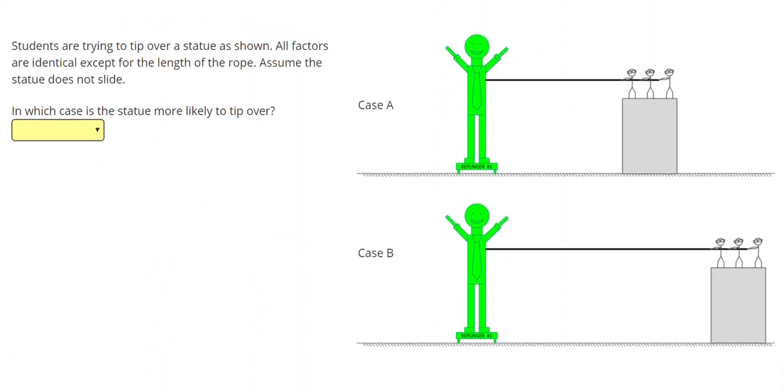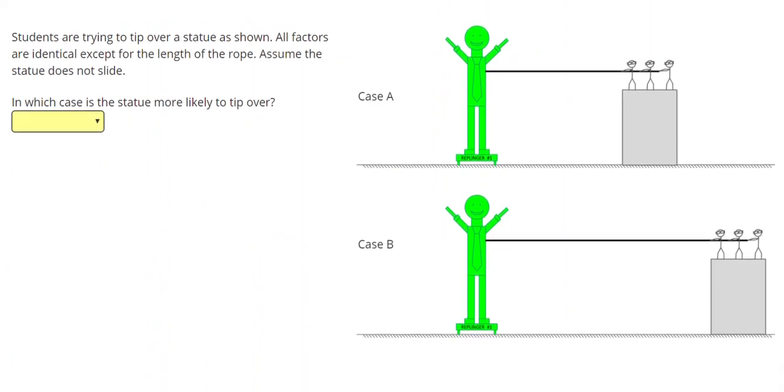Lastly, let's take a look at a picture where some students are trying to tip over a statue. All factors are identical except the length of the rope. Again, let's circle the rotation point. If that statue started to tip over, that's the point that would remain on the ground.